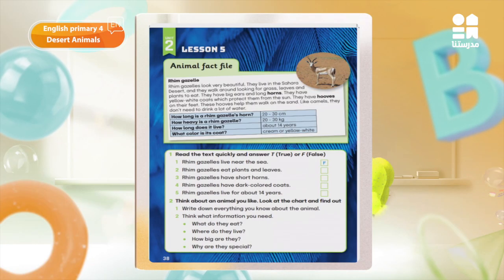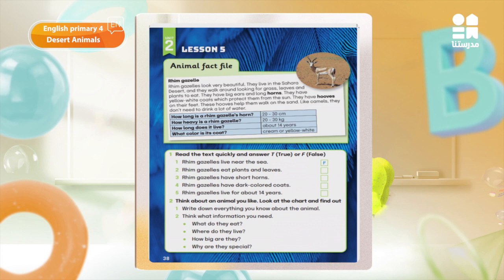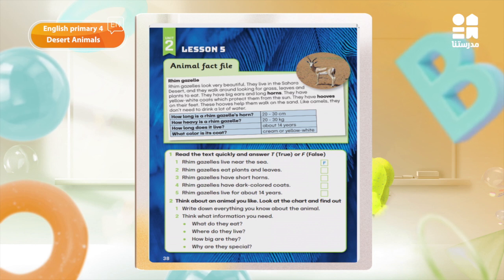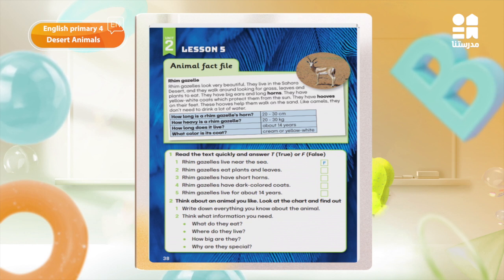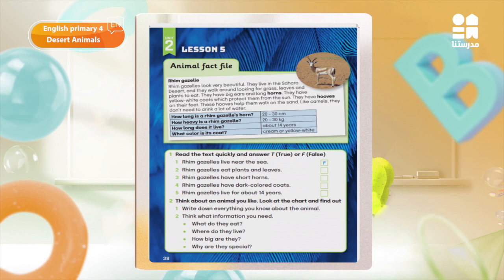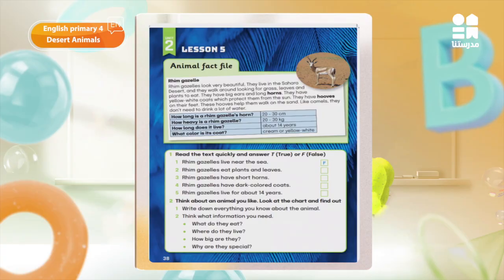Rim gazelle. Rim gazelles look very beautiful. They live in the Sahara desert and they walk around looking for grass, leaves and plants to eat. They have big ears and long horns. They have yellow-white coats, which protect them from the sun. They have hooves on their feet. These hooves help them walk on the sand. Like camels, they don't need to drink a lot of water.